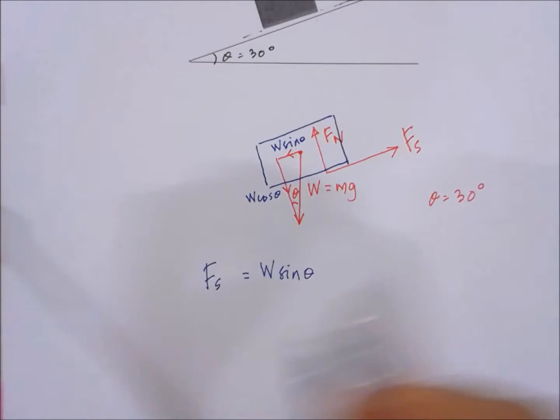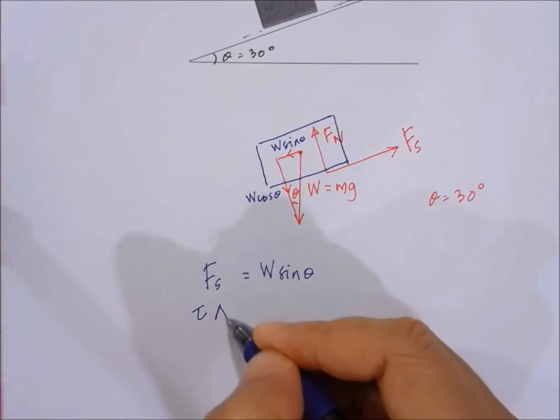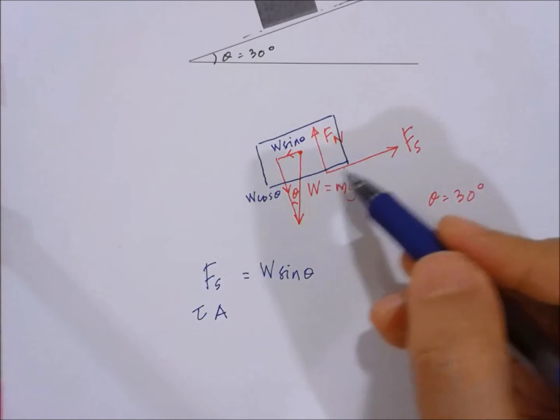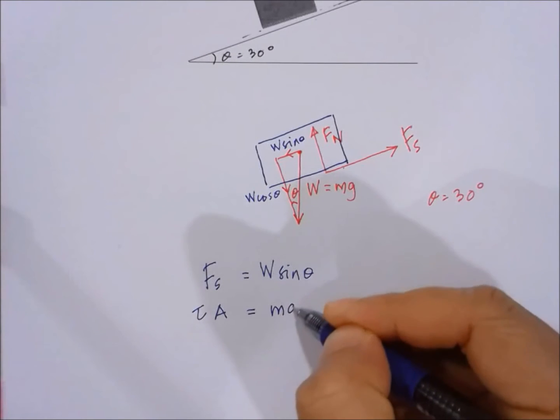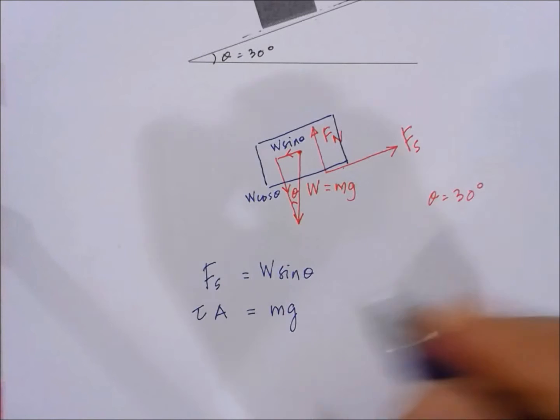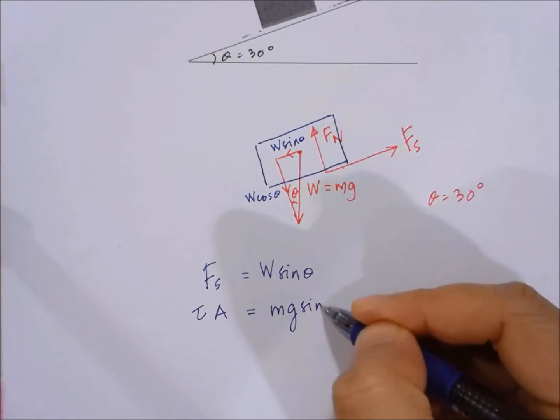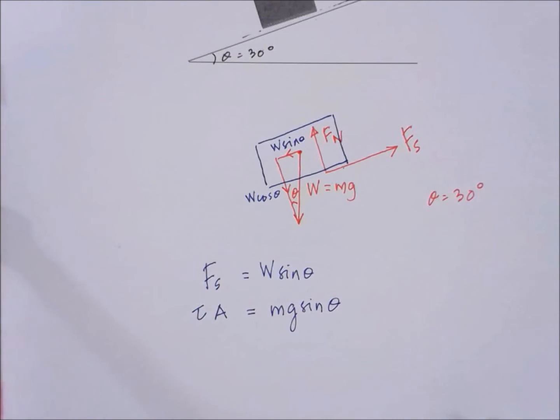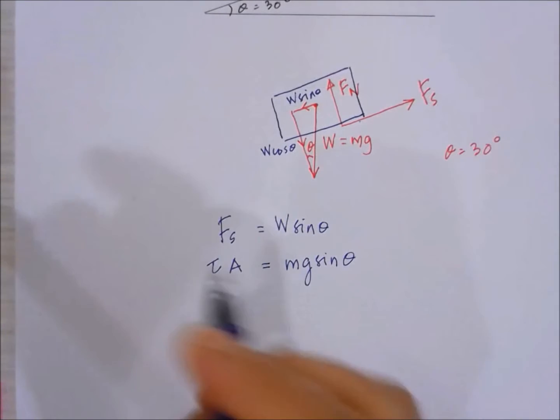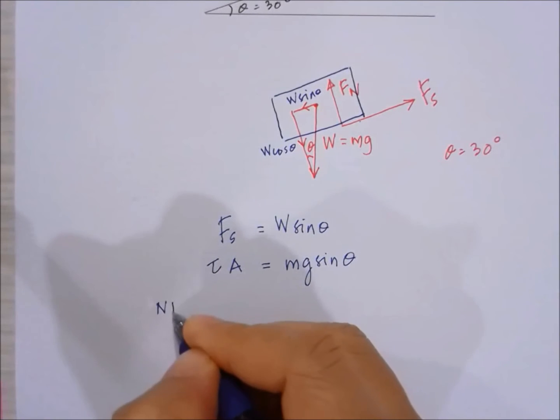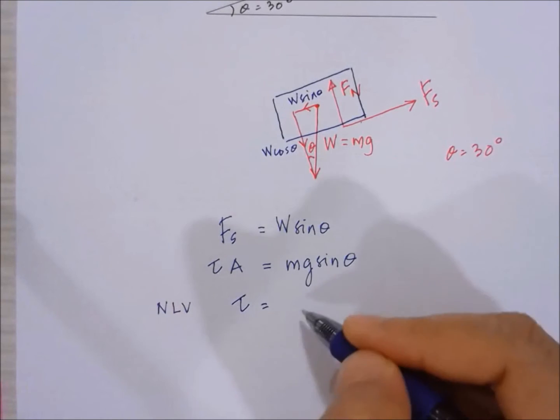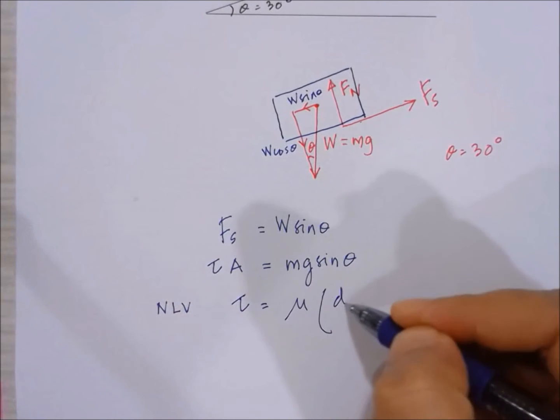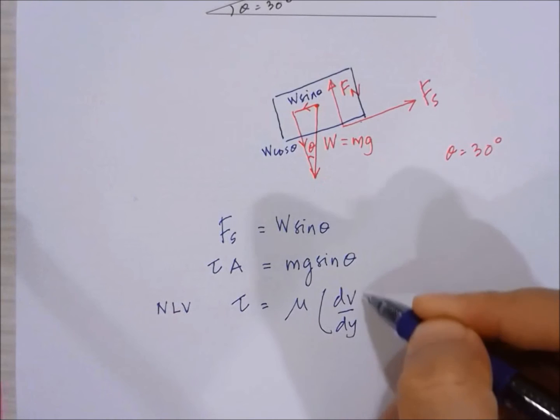But the shear force is actually equal to the shear stress multiplied by the base area of the block, and this is equal to W sin theta. By Newton's law of viscosity, we know that tau is actually equal to mu dv by dy.